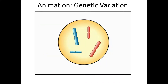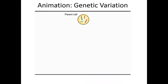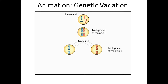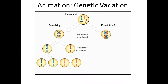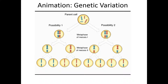Each pair of homologous chromosomes consists of one chromosome inherited from the father and one from the mother, color-coded blue and red. Each pair lines up independently of the other pairs in metaphase I. In an organism with a diploid number of four, independent orientation can produce gametes with four different combinations. In a human being with 46 chromosomes, more than 8 million combinations are possible.